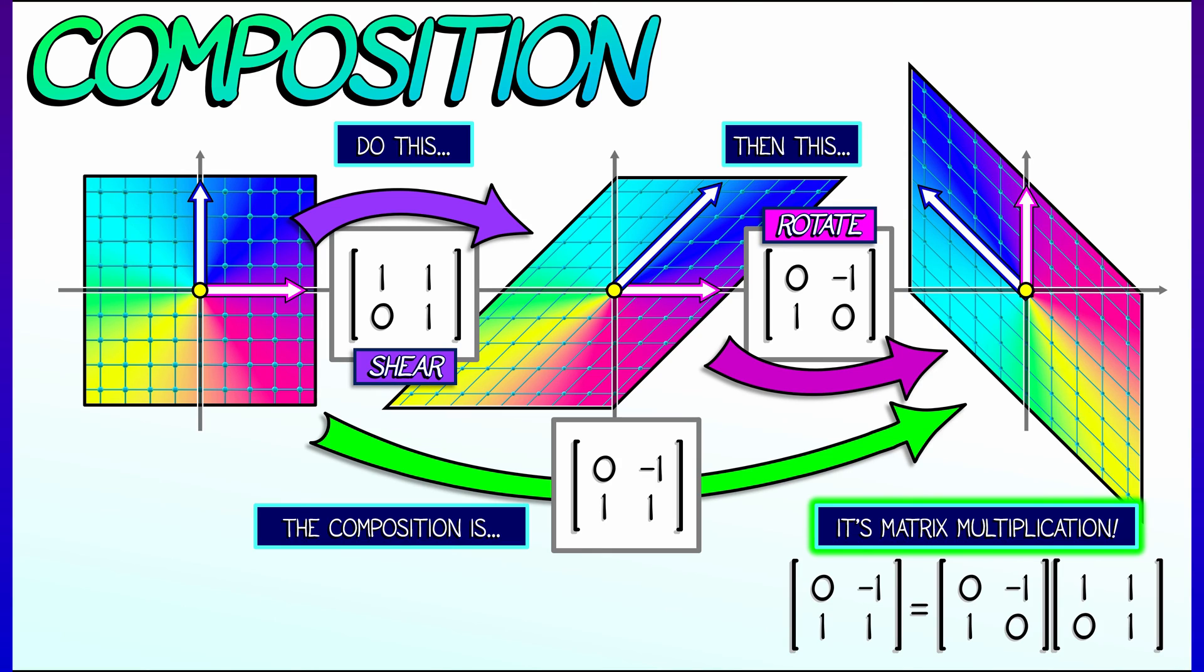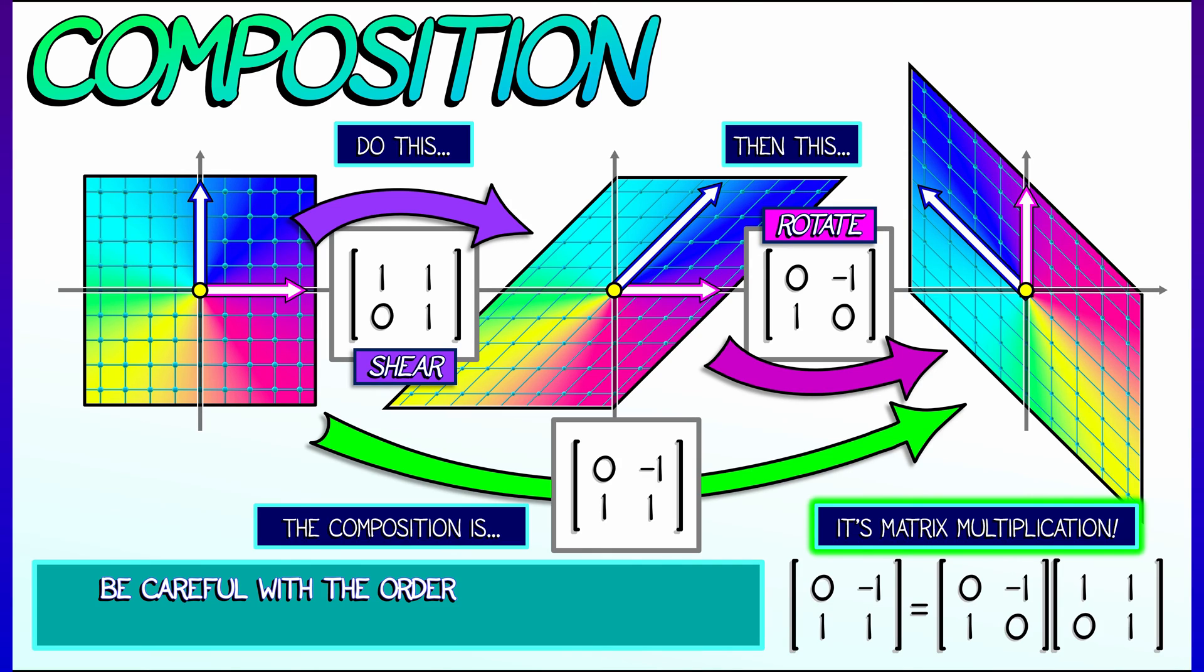First, you do the shear, then you do the rotation. That means the shear matrix is on the right, then the rotation matrix is on the left. You've got to be careful with order of multiplication because matrix multiplication is not commutative in the same way that linear transformations are not commutative.